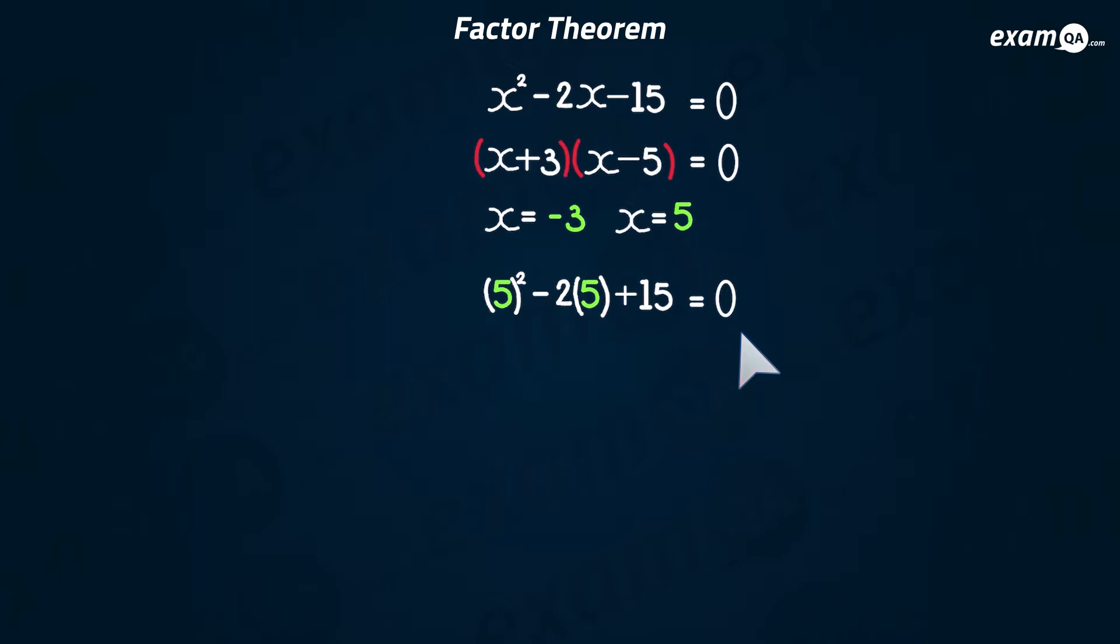And equate to whatever it's meant to equate to. For example, here, it's meant to equate to zero if the solutions are correct. And with 5, it did. Now, I am building up to something, so don't worry.